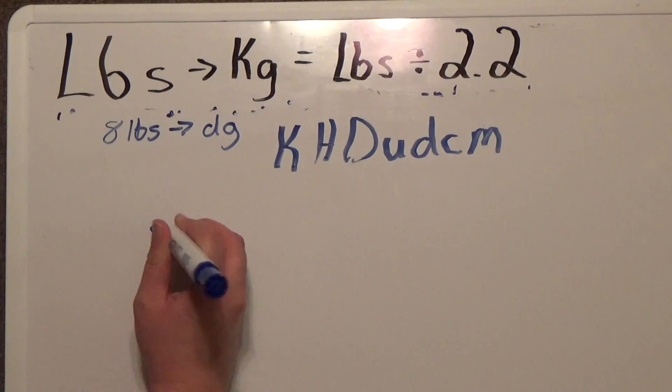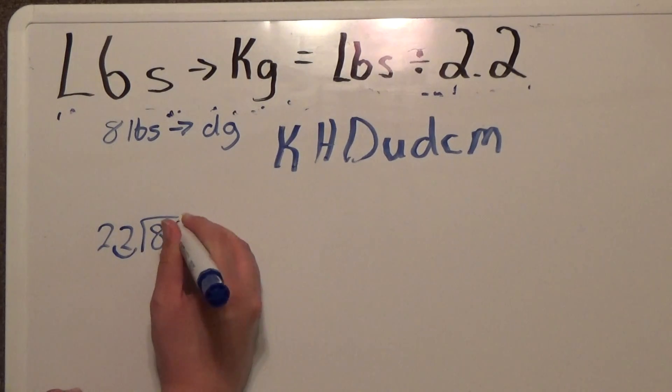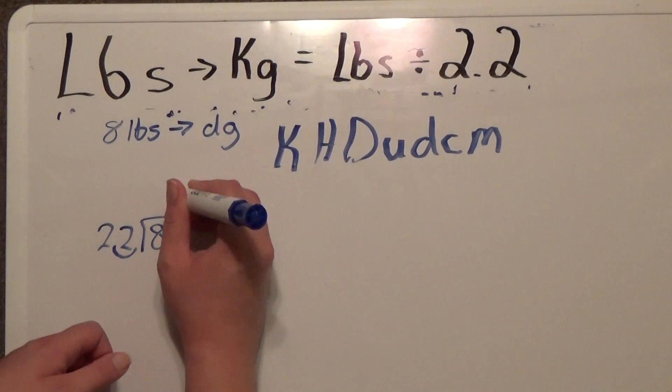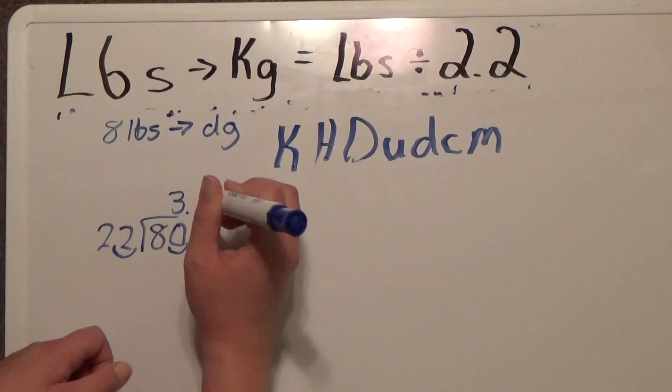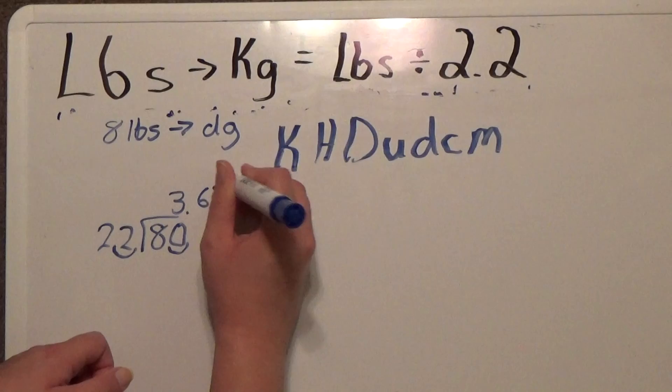So now we're going to take our 8 and divide that by 2.2 or if you're doing longhand, 80 divided by 22. That comes out to 3.63 repeating.